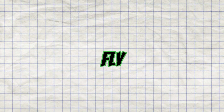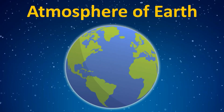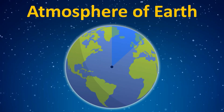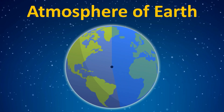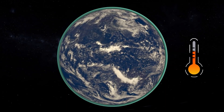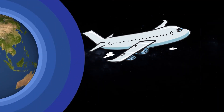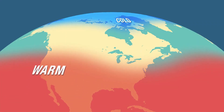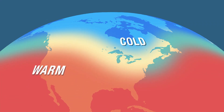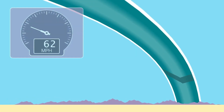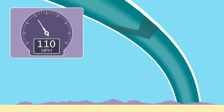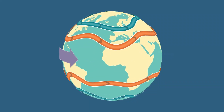Let's talk about the next reason why airplanes fly strange routes, and that reason is wind. Earth's atmosphere is dynamic, with varying wind patterns at different altitudes and latitudes. Pilots and air traffic controllers take advantage of these wind patterns to optimize flight routes. Airlines use air currents known as jet streams to determine flight paths, which can help push an airplane to its destination faster while also allowing it to save fuel on the trip.